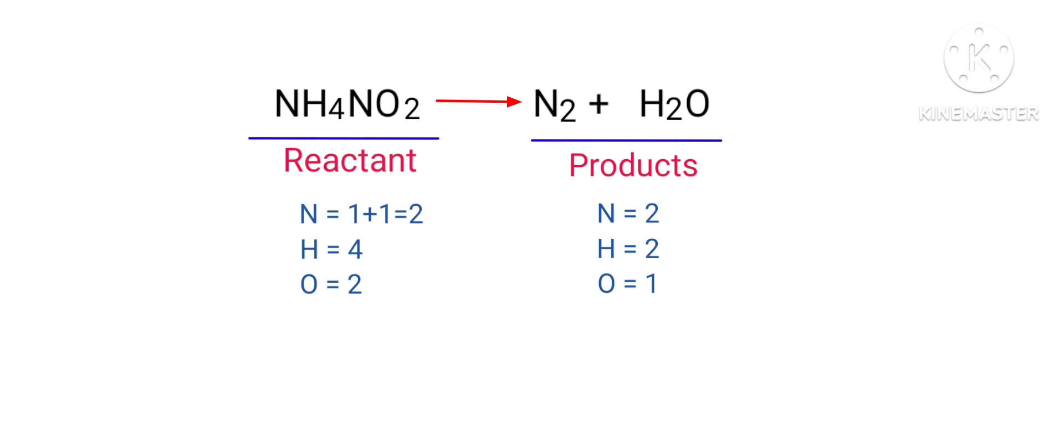If you look at this equation, the equation is not balanced. In the reactants side there are 2 nitrogen atoms, 4 hydrogen atoms and 2 oxygen atoms present. And the products side there are 2 nitrogen atoms, 2 hydrogen atoms and 1 oxygen atom present. The number of atoms are not balanced on both sides.